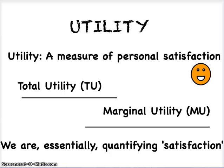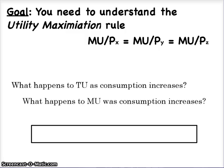Now we move on to the idea of utility, which will build upon those basic ideas. We have to remember that utility is satisfaction, not usefulness. We're going to be paying attention to total utility and marginal utility, and what we're going to attempt to do is quantify satisfaction. The goal here is to understand utility maximization. Utility represents satisfaction, so we're going to maximize our satisfaction.